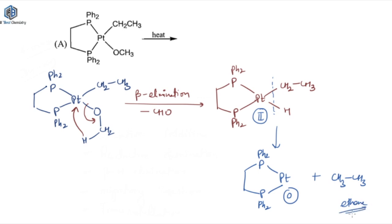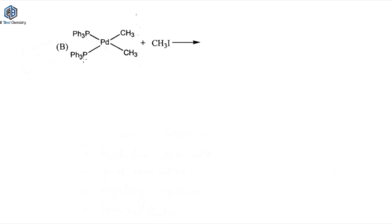Since it was asked which reaction will not produce ethane as the product, and in reaction A we are getting ethane, this cannot be our answer. Now let's see what is going to happen in option B.